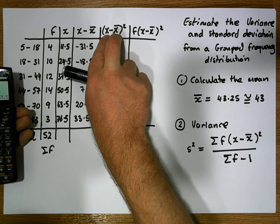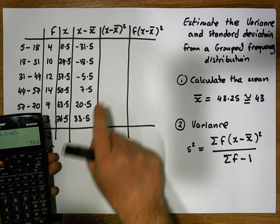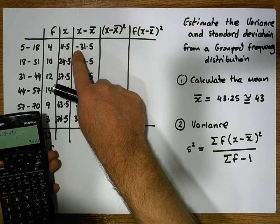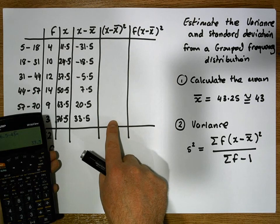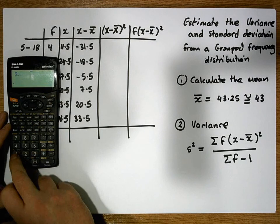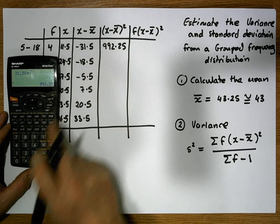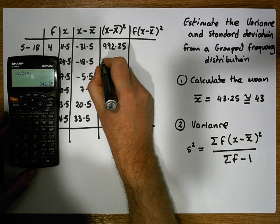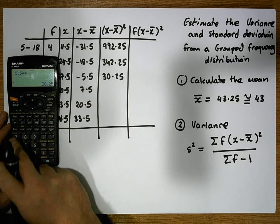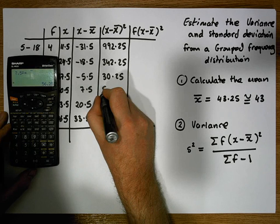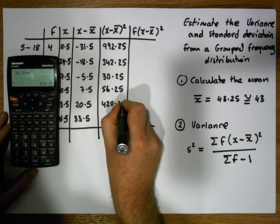Next we calculate the squared distances by squaring each value in the x minus x̄ column. The square of any negative number is always positive, so all values will be positive. So: 31.5² = 992.25, 18.5² = 342.25, 5.5² = 30.25, 7.5² = 56.25, 20.5² = 420.25, and 33.5² is next.